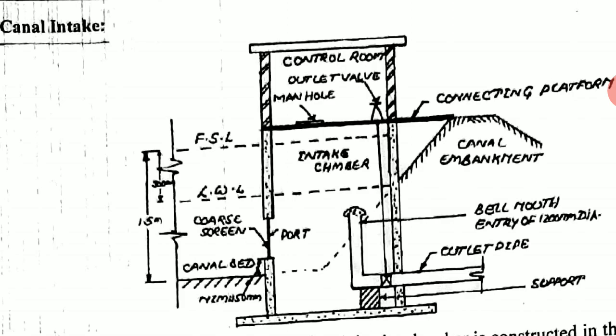You can see the flood level and low water level. The coarse screen is provided at the entrance of the intake well, and the canal bed is shown — this intake structure is constructed on the canal bed. When water enters into the intake well through the coarse screen, the water is purified by removing physical impurities, and then enters into the intake chamber.